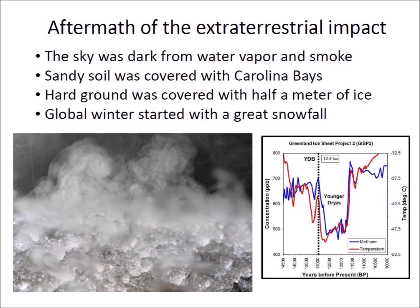The sandy soil close to the water table was covered with elliptical Carolina Bays, and hard ground was covered by half a meter of ice from the ballistic hailstorm. The global winter of the Younger Dryas started with a great snowfall from the condensation of steam produced by the extraterrestrial impact on the Laurentide Ice Sheet